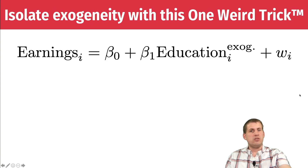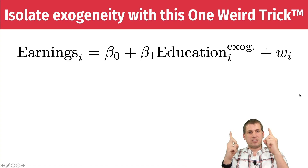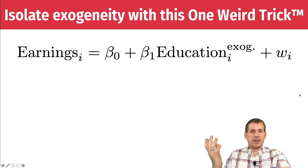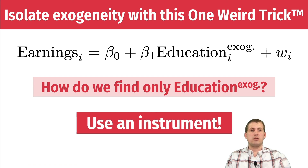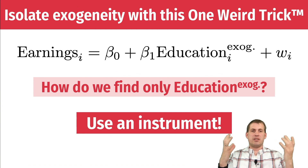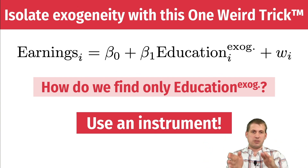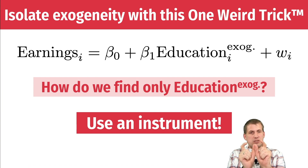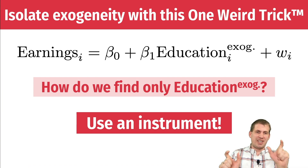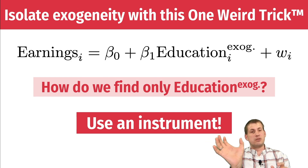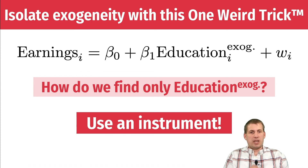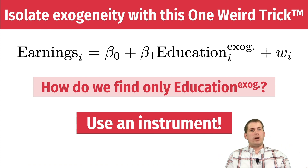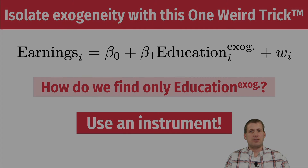So how do we actually do that? Ideally we want to find just the exogenous part of education. We use an instrument. That is the whole point of instrumental variables regression — it lets you split your policy variable into an exogenous part and an endogenous part, so you're only left with the exogenous part and can talk about causation. In the next section, we'll talk about what an instrument is and how that actually works.